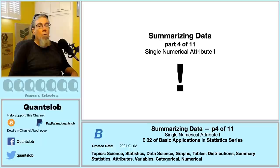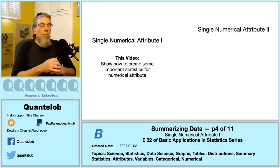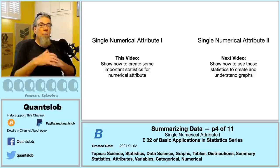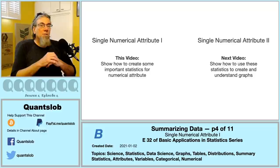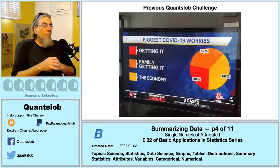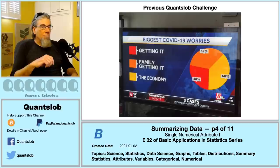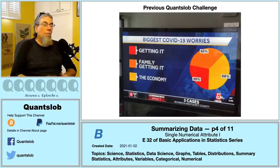Greetings and welcome to another installment of QuantSlob — this is episode 32 in our basic application series. We're motoring on with part four of our summarizing data series. We've split summaries for a single numerical attribute across two videos. In this video we'll show how to calculate some really important summary statistics; in the upcoming video we'll use these summaries to construct a box plot. But first, let's visit the previous QuantSlob challenge: what is wrong with those pie charts? A pie chart shows the distribution of a categorical attribute — the percents should sum to 100.